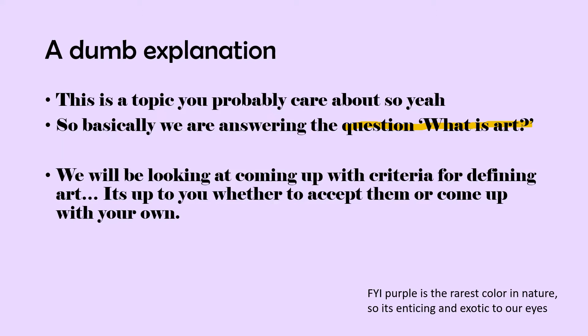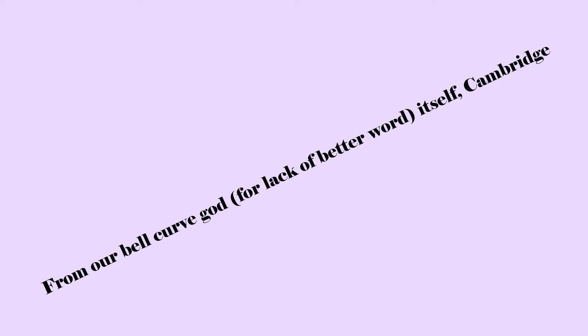Anyways, there are different ways to define something. The point of this episode will be trying to figure out how to define art. The easiest way to do it is just looking at a dictionary — so where else should we go but the Cambridge Dictionary? A Levels is marked by Cambridge, so might as well go to their dictionary.